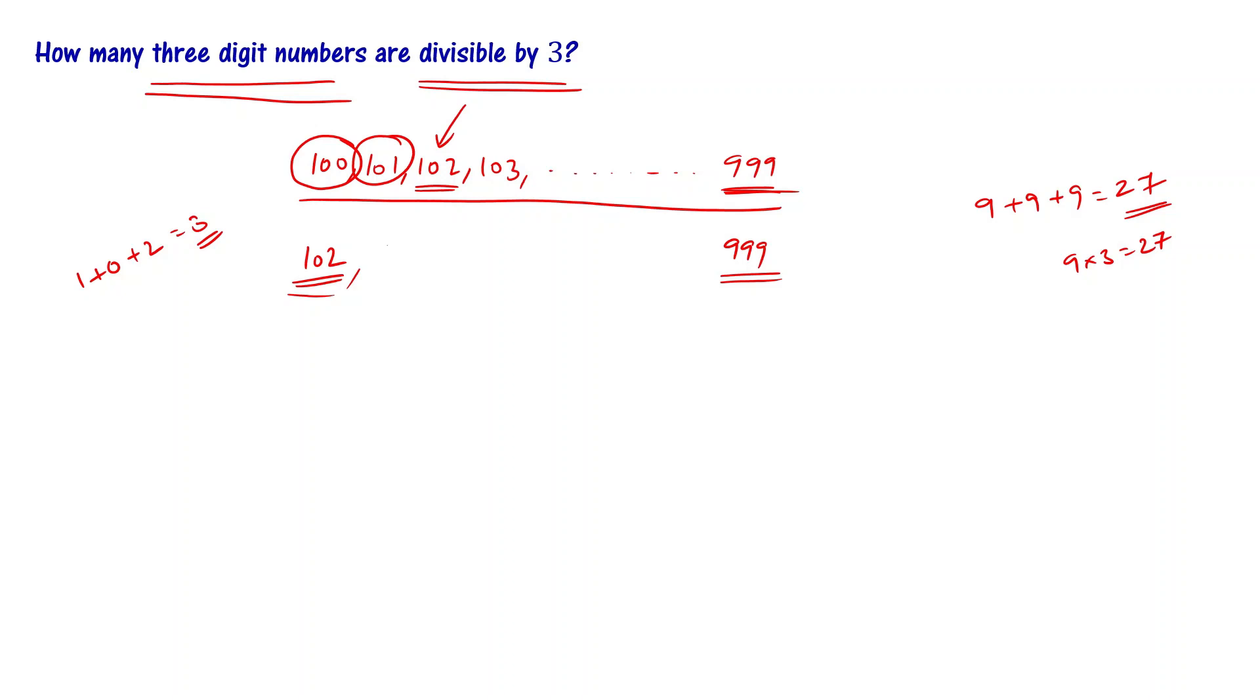If you look at the pattern: 102, then 105, 108, and so on, the difference is 3, 6, or 9. Next 111, the difference is 3.